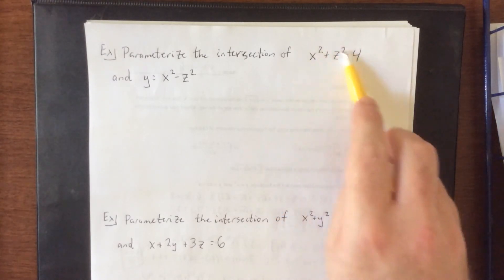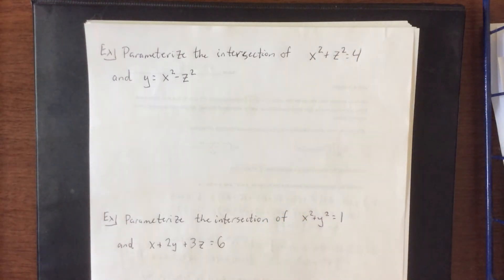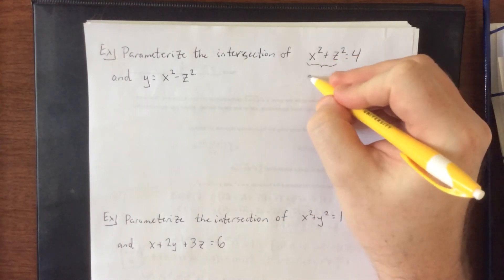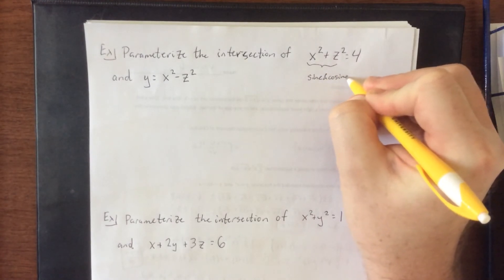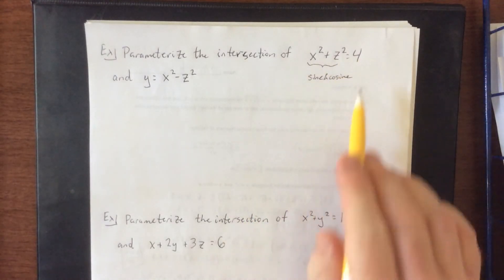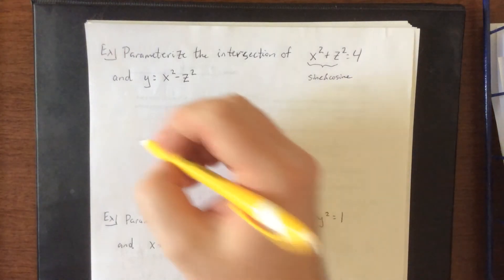However, I do see the cross sections are circles. Parameterizing a circle usually involves a sine or a cosine. Now technically, it shouldn't matter which one is which, but I do want to make sure that they're equal to the radius of the circle times the sine or the cosine.